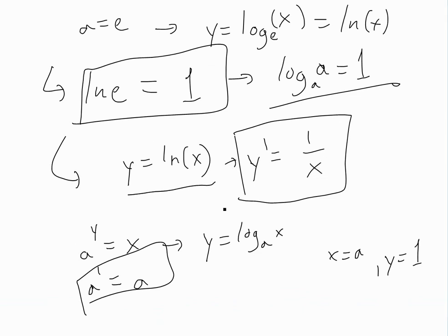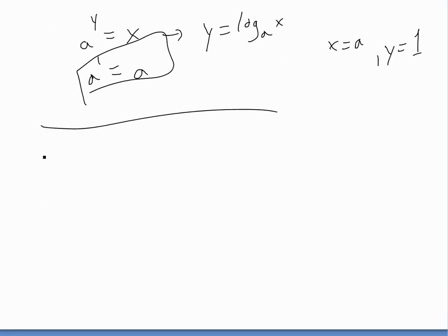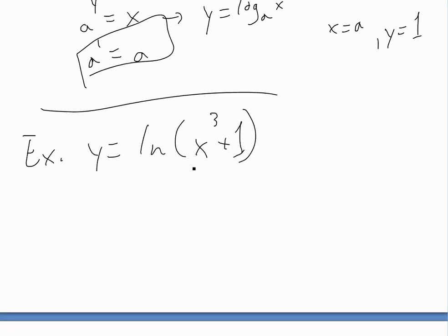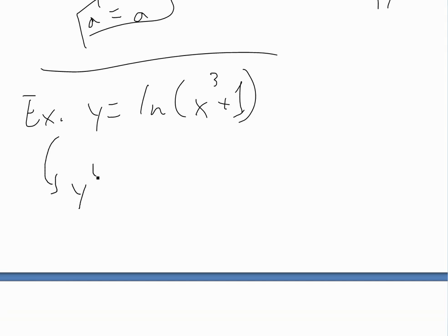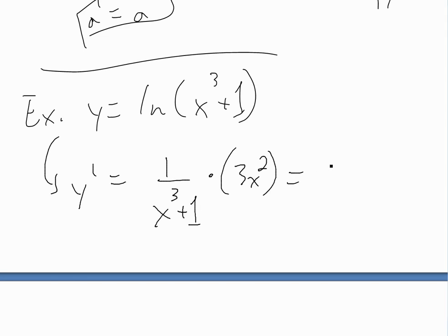Let's look at an example. For y = ln(x³ + 1), we use the chain rule. The derivative of ln of something is 1 over that something, so we get 1/(x³ + 1). Then we multiply by the derivative of the inside, which is 3x². The final answer is 3x² / (x³ + 1).